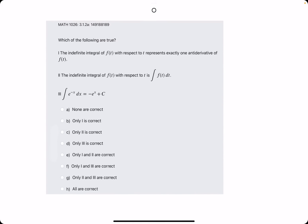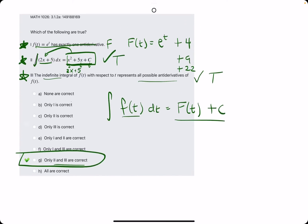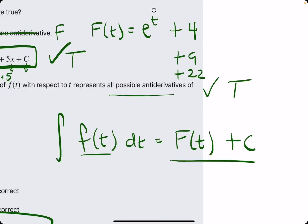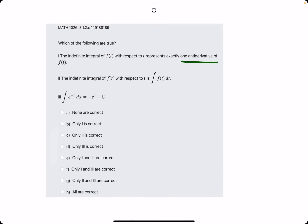Let's go ahead and do two more. Which of the following are true. Indefinite integral of f(t) with respect to t represents exactly one antiderivative of f(t). Well, I think we just covered that it doesn't just represent one. It represents all possible antiderivatives. So, not exactly one. It represents all of them. So, this statement is false.